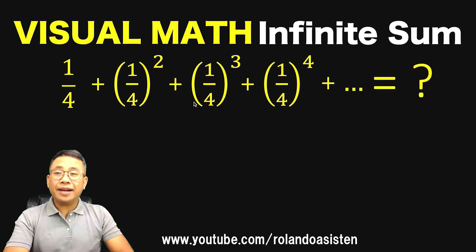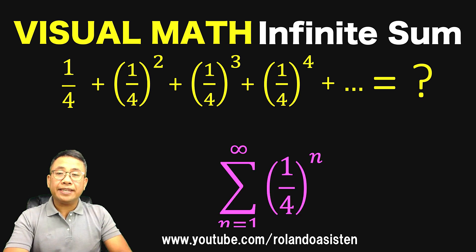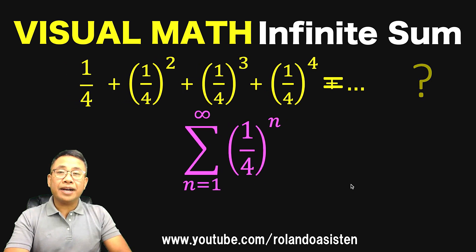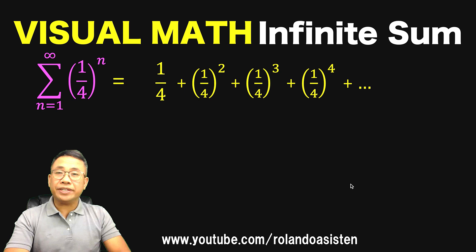Now this kind of repetitive sum can be written in a shortcut method this way. It's the sum of 1/4 raised to n where our n starts from exponent 1, exponent 2, exponent 3, exponent 4 until infinity. So what is the sum of this infinite geometric series?